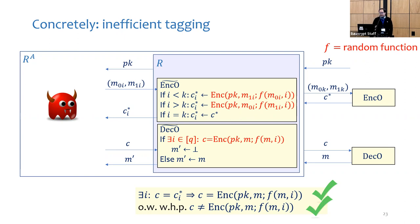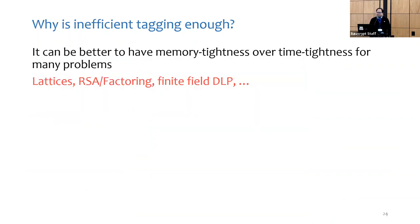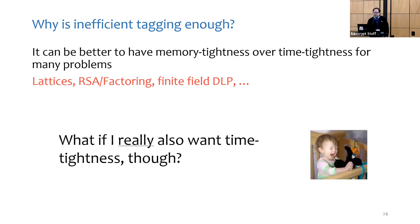So we must ask ourselves: are non-time-tight reductions completely useless? No — sometimes it is better to have memory tightness over time tightness, because for many hard problems used in cryptography the fastest memoryless algorithm is much slower than the fastest general algorithm. But if we really want a reduction that is both memory-tight and time-tight, it turns out that by changing the definition we can actually achieve that.